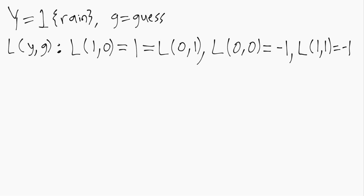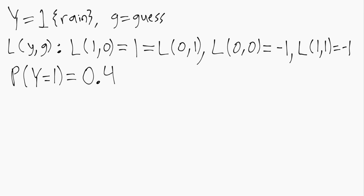With the setup in place, we need to know the probability of raining — that is, the probability that y equals one. To start, we'll set that to 40%, or 0.4. Now we have enough information to compute our mean loss for the case where we guess no rain and the case where we guess rain, and then we choose whichever guess minimizes our mean loss.